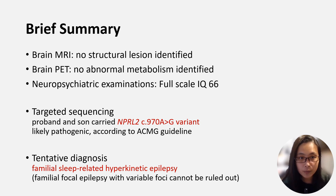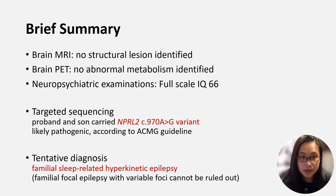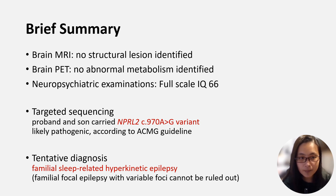As shown here, we can recap the patient's data. His video EEG recordings demonstrate violent movements with concurrent EEG change. His MRI and PET results were unrevealing. However, we did find a likely pathogenic mutation of the NPRL-2 gene.